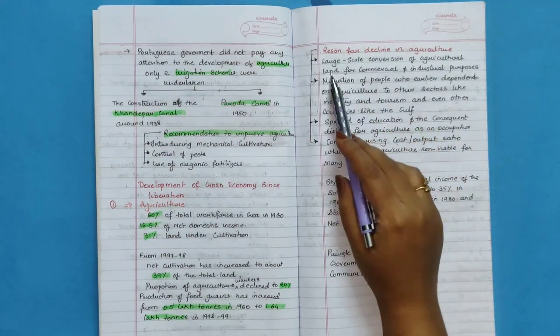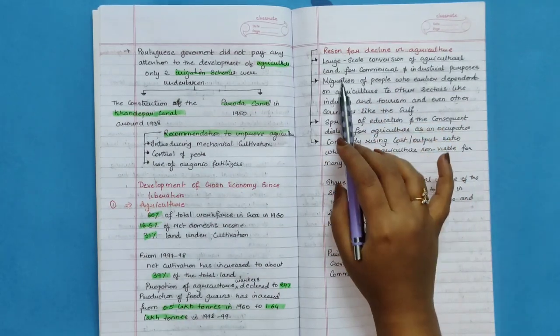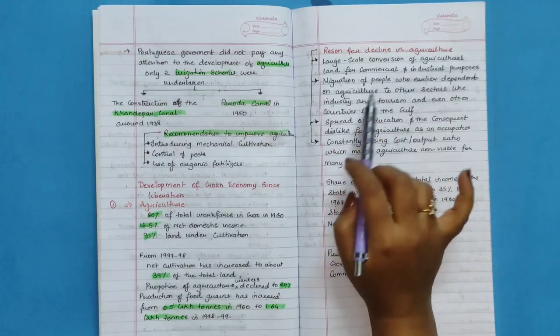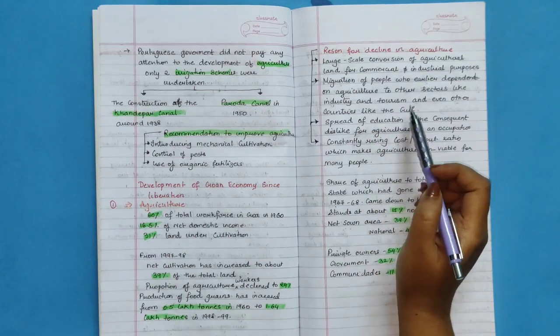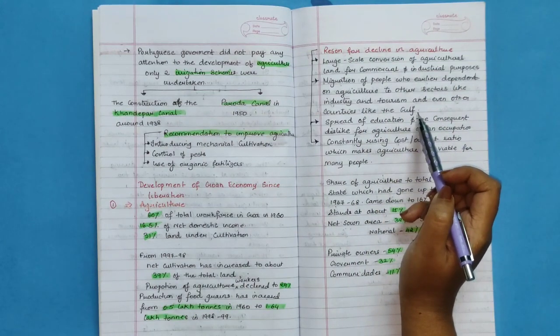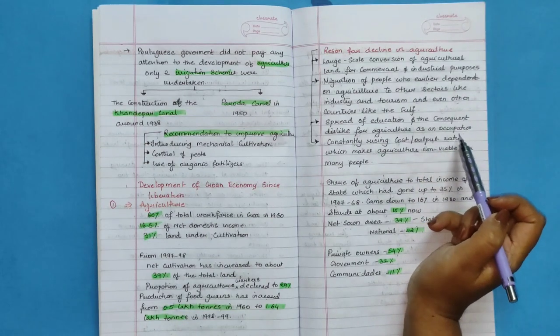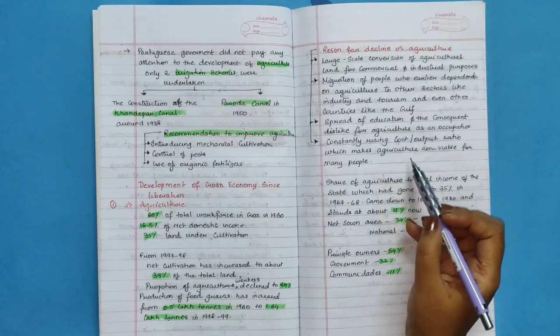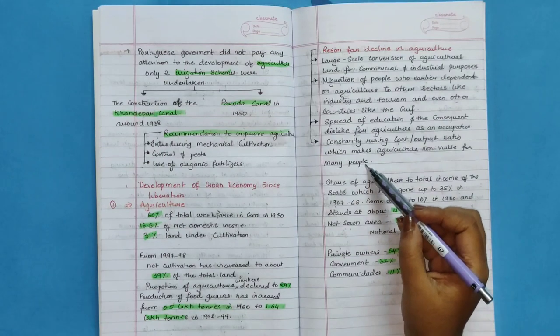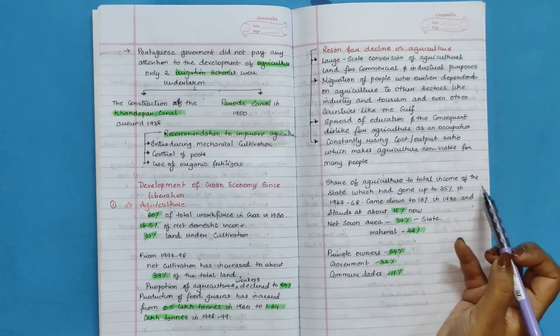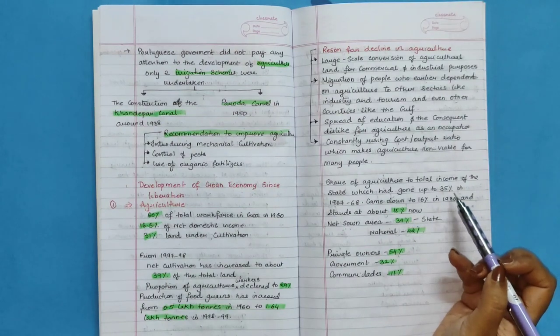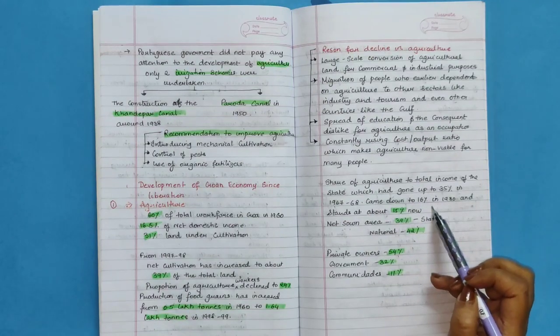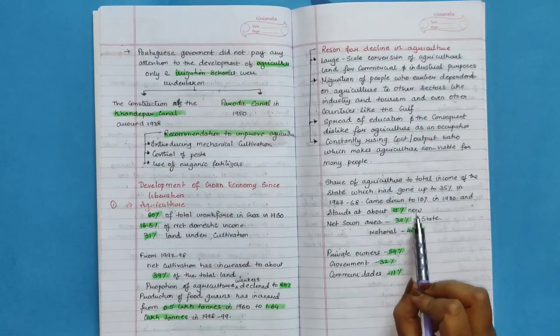Reasons for decline in agriculture: Large-scale conversion of agricultural land for commercial and industrial purposes. Migration of people who earlier dependent on agriculture to other sectors like industry and tourism and even other countries like the Gulf. Spread of education and the consequent dislike for agriculture as an occupation. Constantly rising cost-output ratio which makes agriculture non-viable for many people. Net share of agriculture to total income of the state which had gone up to 35% in 1967 to 1968 came down to 16% in 1980 and stands at about 15% now.